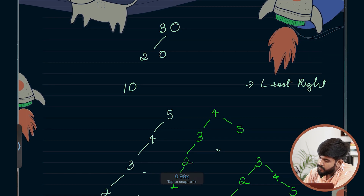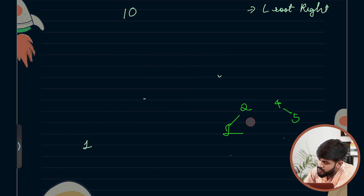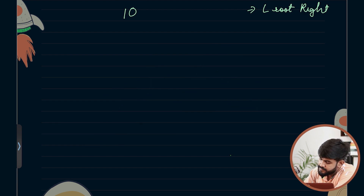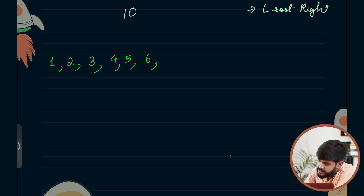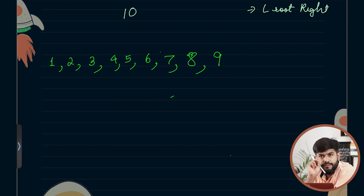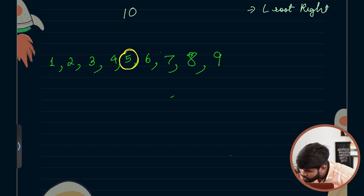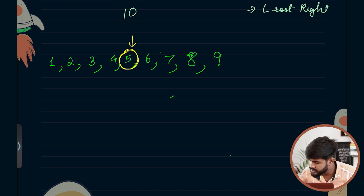Greedy is a paradigm where, to achieve a global optimal, we focus on local optimal that builds up the global result. For example, if you want to minimize your monthly budget, you focus on spending less each day. Similarly, to balance the entire tree, we focus on distributing elements equally at each node. For elements 1 through 9, if we want to distribute equally for the root, we should optimally select the middle element — so we would make 5 the root.